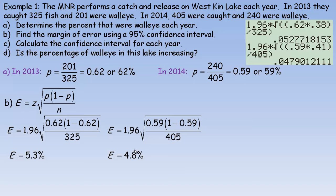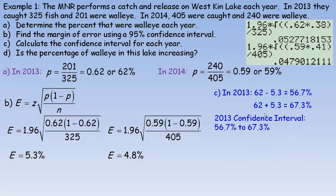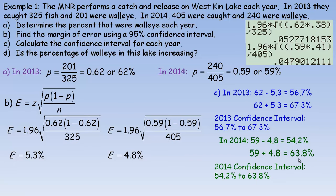So to calculate the confidence intervals: for 2013 the percentage was 62%, so we go 5.3% above and 5.3% below that. The confidence interval for 2013 is 56.7% to 67.3%. That means there should be between 56.7% and 67.3% of the fish being walleye. In 2014, we take our 59% and subtract 4.8% and add 4.8%, so the confidence interval extends from 54.2% to 63.8%.